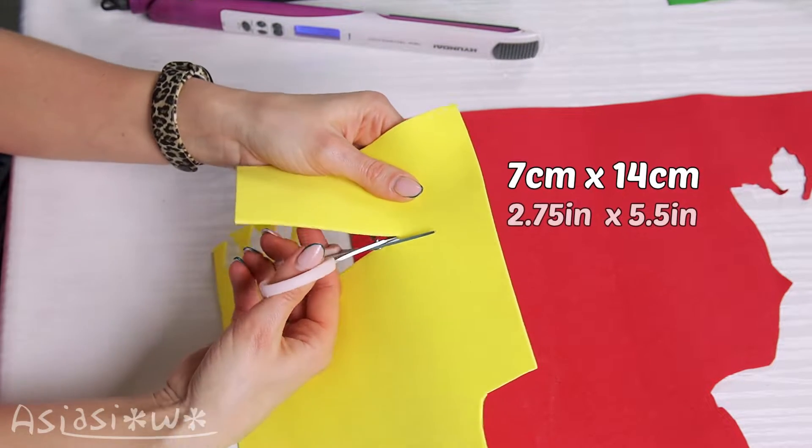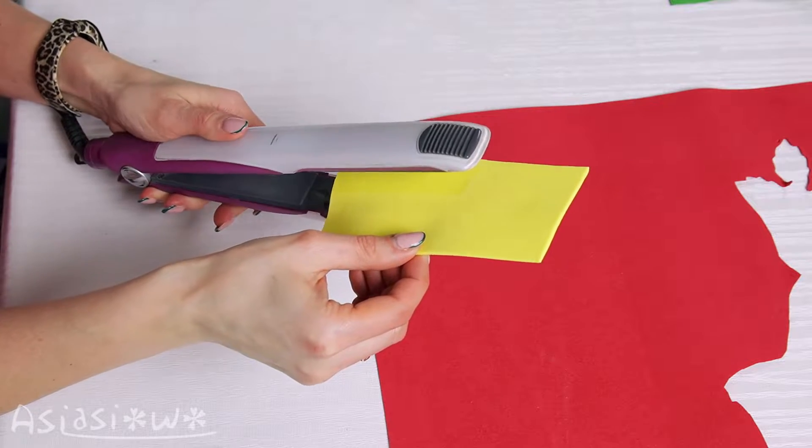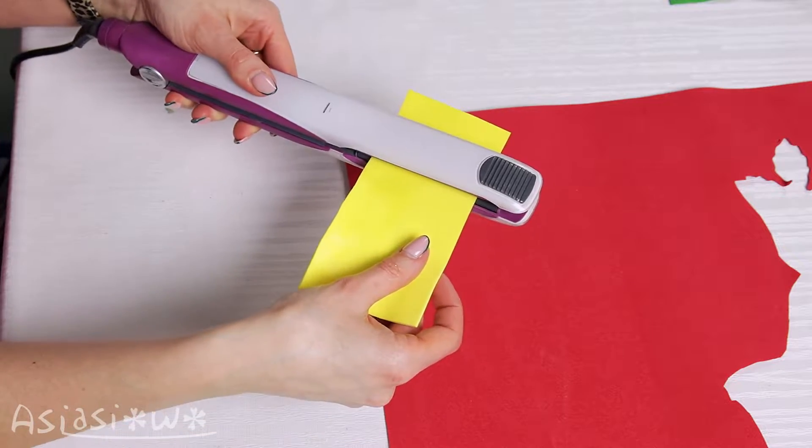Cut a strip out of EVA foam. Heat it with a straightener to make it easy to shape. Stretch it.